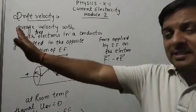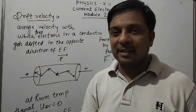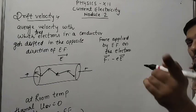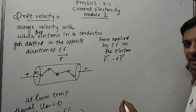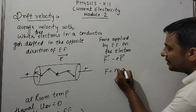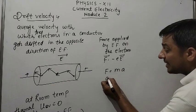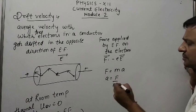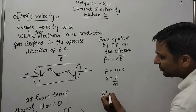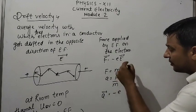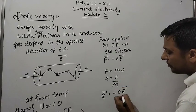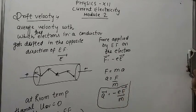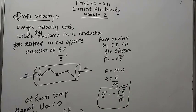With this force, the electron is accelerated. We know F equals mass times acceleration, so acceleration A equals F by M. Using vector form, the acceleration is minus eE upon M.